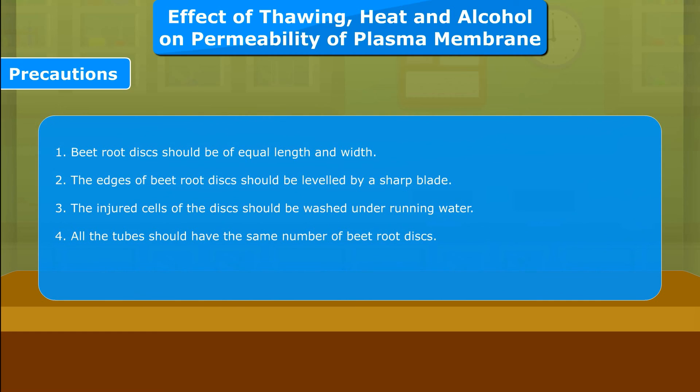4. All the tubes should have the same number of beetroot discs. 5. The volume of water and other solvents taken should be the same.